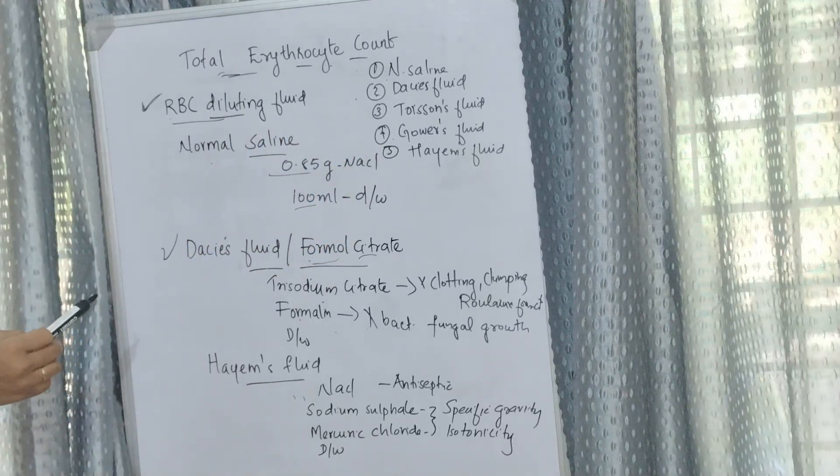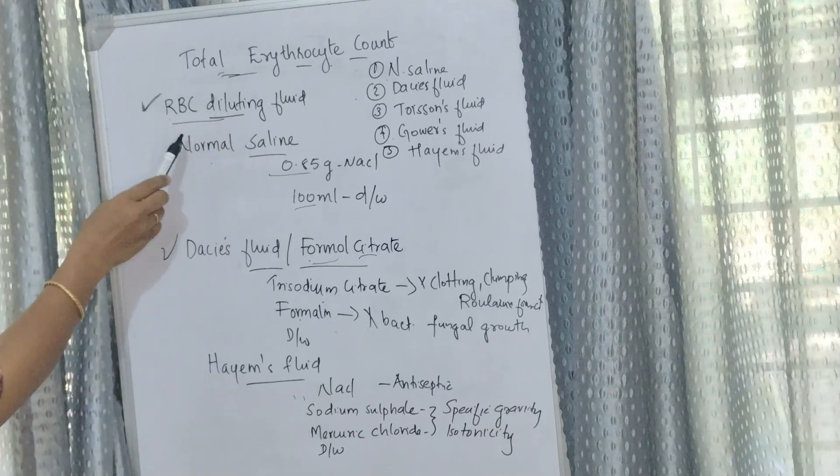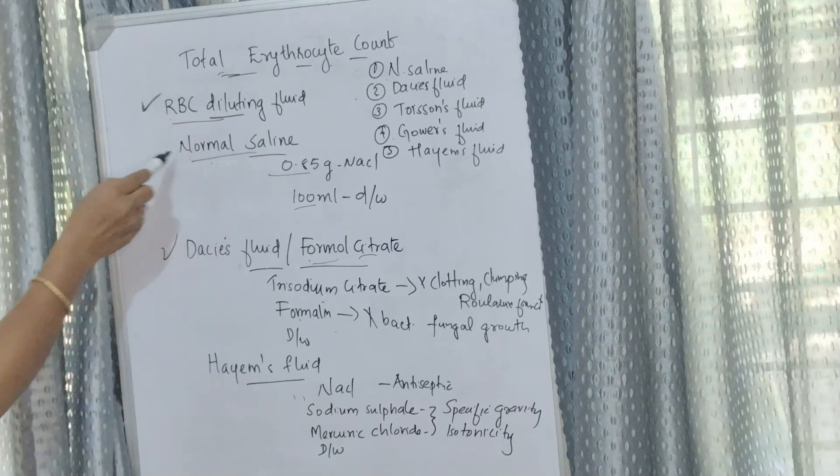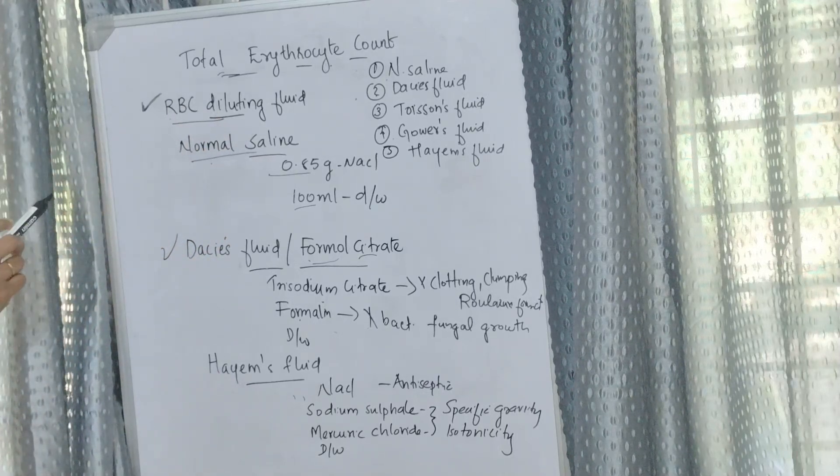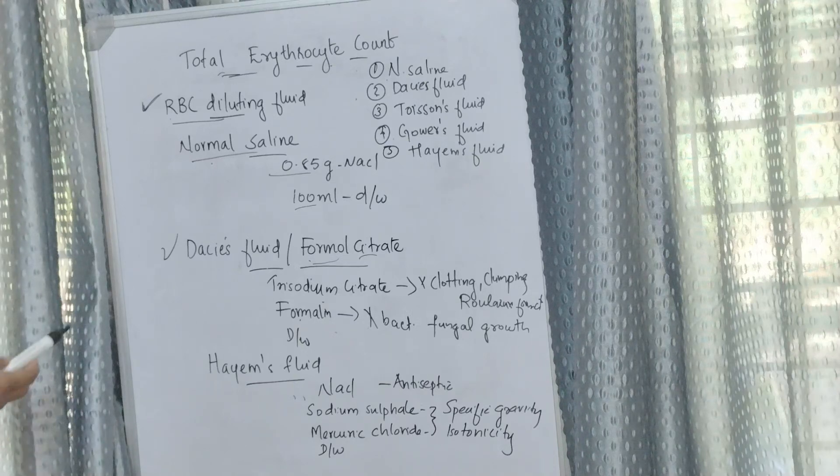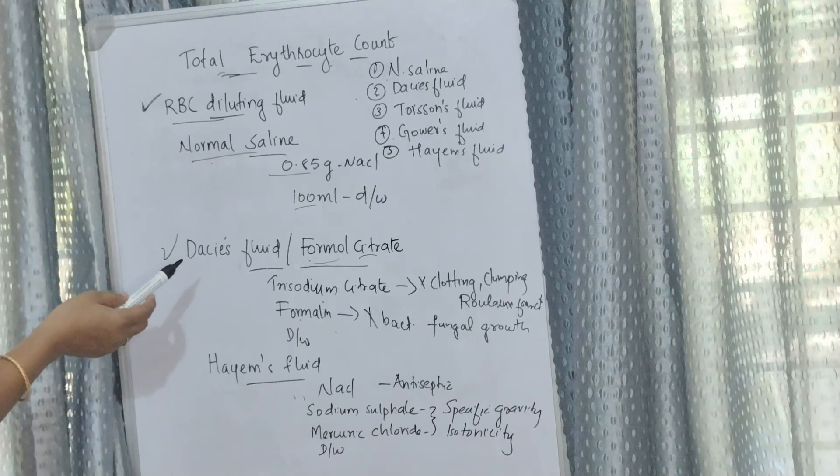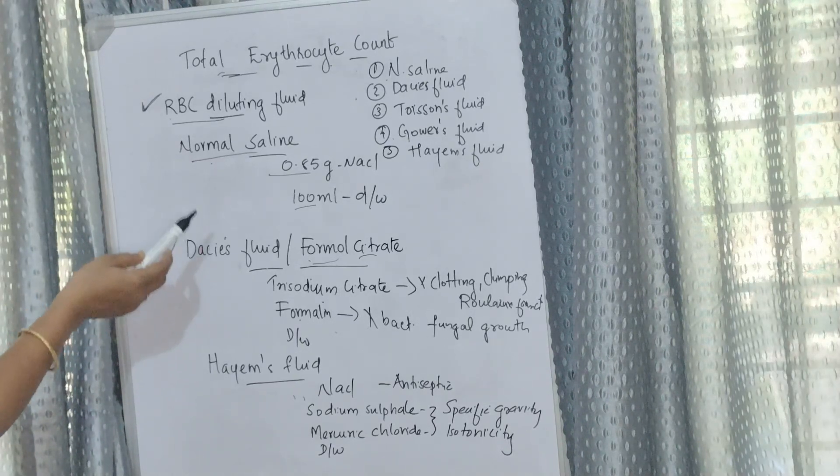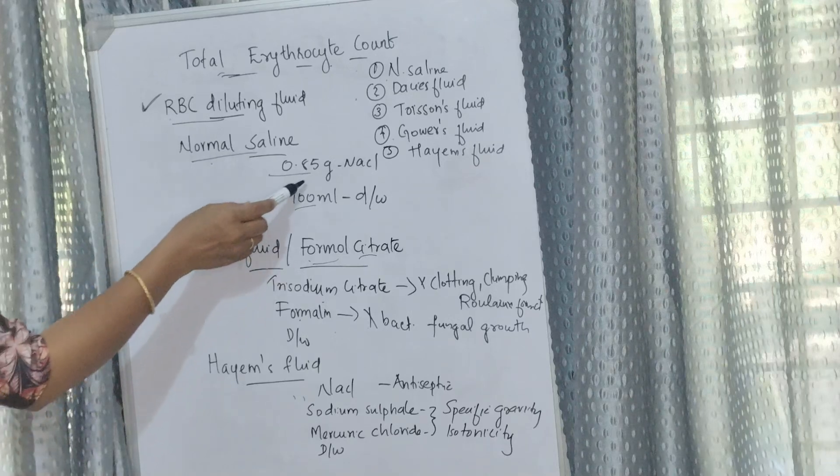Normal saline can be used in emergency situations but it will cause slight rouleaux formation. It has advantages of simplicity and ready availability. The contents are 0.85 grams sodium chloride per 100 ml distilled water.